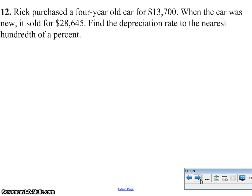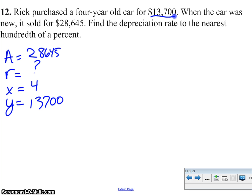All right, Rick purchased a 4-year-old car for $13,700. Again, we're looking at an exponential equation. So A equals, R equals, X equals, and Y equals. So the car at 4 years was $13,700. And when it was new, it sold for $28,645. And it wants to know what is the depreciation rate to the nearest hundredth of a percent. So I'm going to go out two decimal points when it asks for that. Plugging into my formula, I have $13,700 equals $28,645, all times 1 minus R to the fourth power. My first step is to divide both sides by the $28,645, because I'm working to get R by itself.